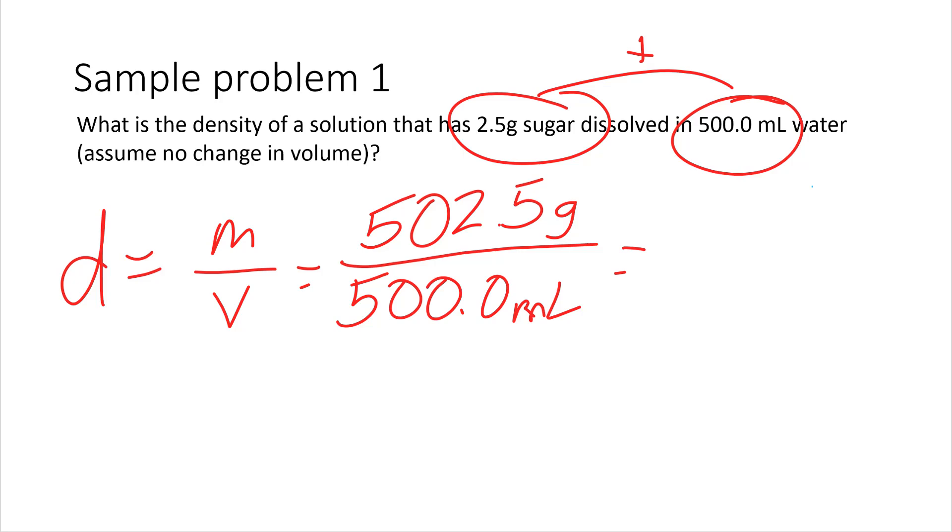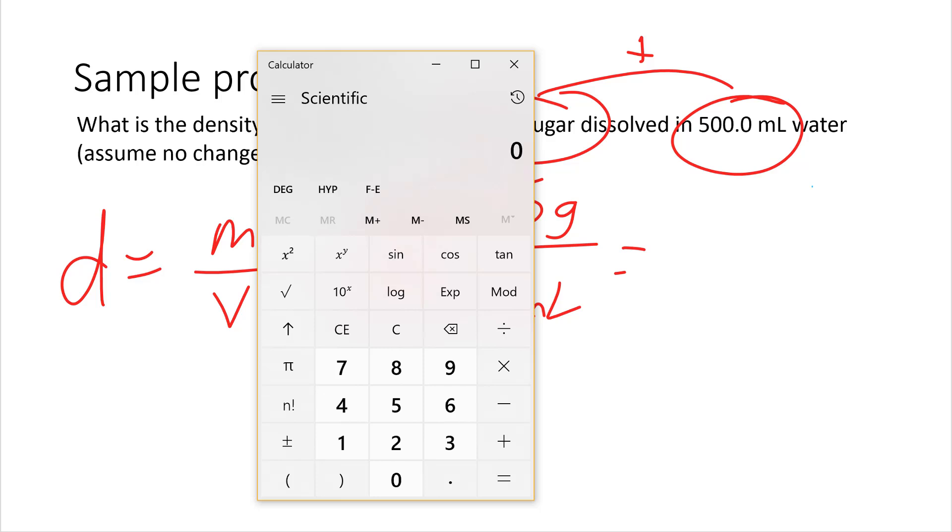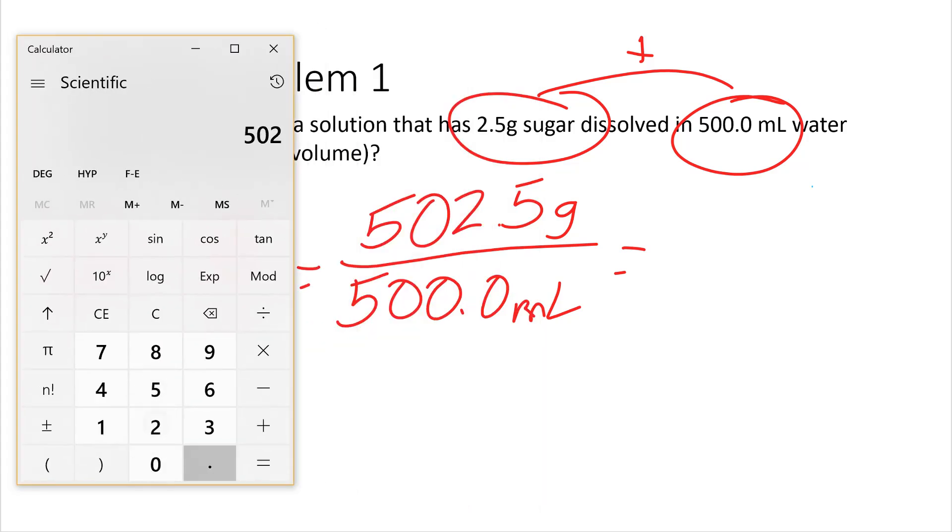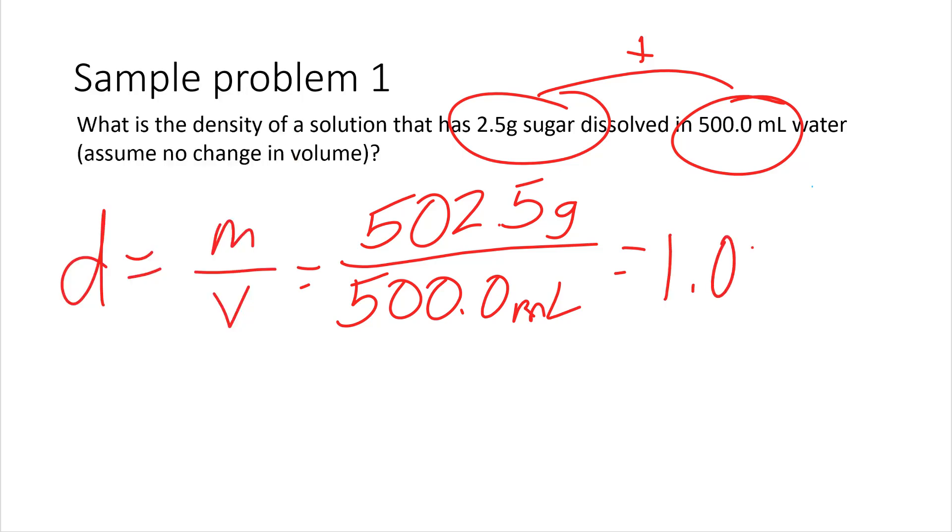So, I'm going to bring out my calculator here. 502.5 divided by 500, and we get 1.005. Now, both of these numbers have four digits, so I'm going to write four digits in my answer. 1.005, and we have to write units. Grams divided by milliliters. Notice, grams is on the top, milliliters on the bottom. So, the same thing is true in my answer. So, that's how you write the answer. Remember, you always write units, you always show your work.